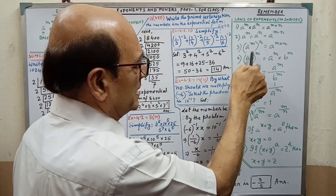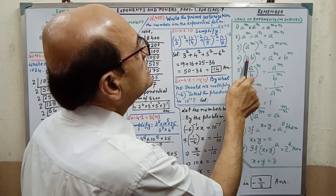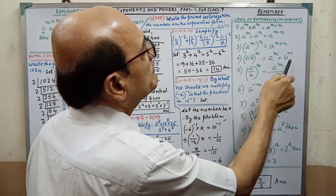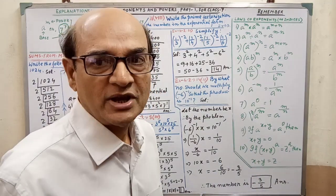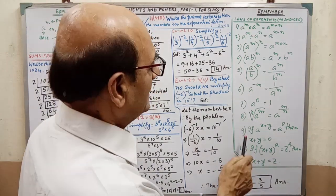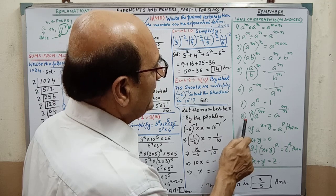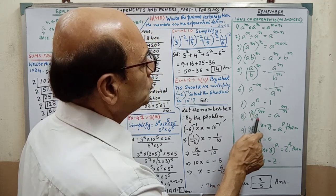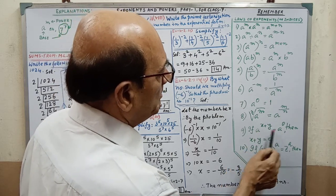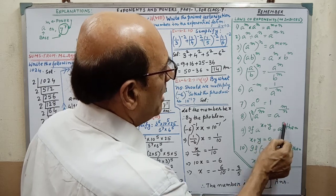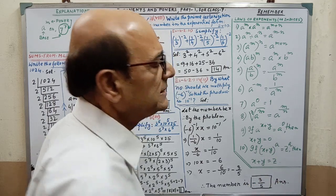In case of power of a power, the exponents are multiplied. When bases are different, AB whole to the power M will be split accordingly. There are more laws to go through and remember. For class 7, laws 8, 9, and 10 are not given in your book. Also, if A to the power M equals A to the power N and the bases are the same on both sides, then the powers are equal. If the powers are equal on both sides, then the bases are equal.